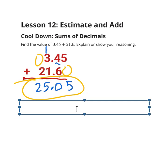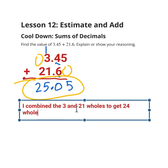So certainly, some of us might say, I combined the 3 and 21 wholes to get 24 wholes. There we go.